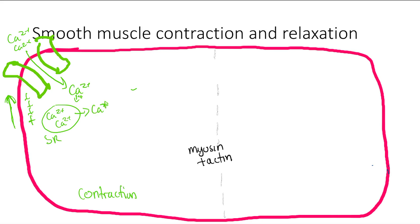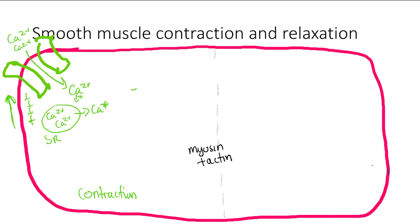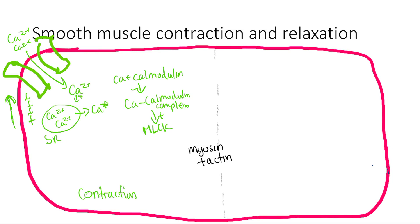This is called calcium-induced calcium release — that's an important term — in smooth muscle. This calcium is going to bind to something called calmodulin, making a calcium-calmodulin complex. That complex is going to activate something called myosin light chain kinase. Kinase phosphorylates, so it's going to phosphorylate the myosin light chains.